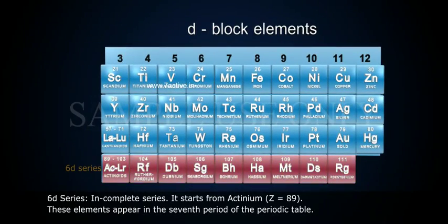6d series, incomplete series. It starts from Actinium (Z = 89). These elements appear in the 7th period of the periodic table.